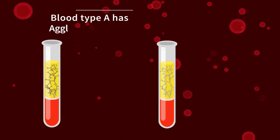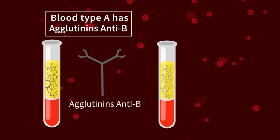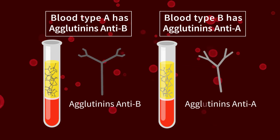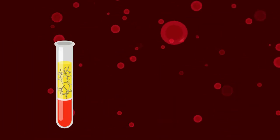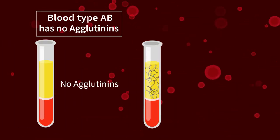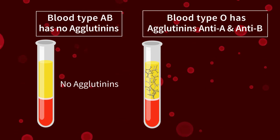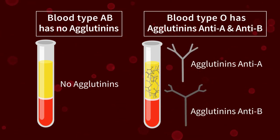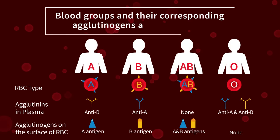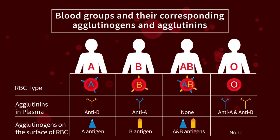Blood type A has agglutinins anti-B. Blood type B has agglutinins anti-A. Blood type AB has no agglutinins. Blood type O has agglutinins anti-A and anti-B. The following table shows the blood groups and their corresponding agglutinogens and agglutinins.